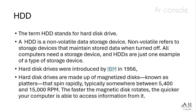Hard disk drives are made up of magnetized disks known as platters that spin rapidly, typically somewhere between 5,400 and 15,000 RPM. The faster the magnetic disk rotates, the quicker your computer is able to access information from it.